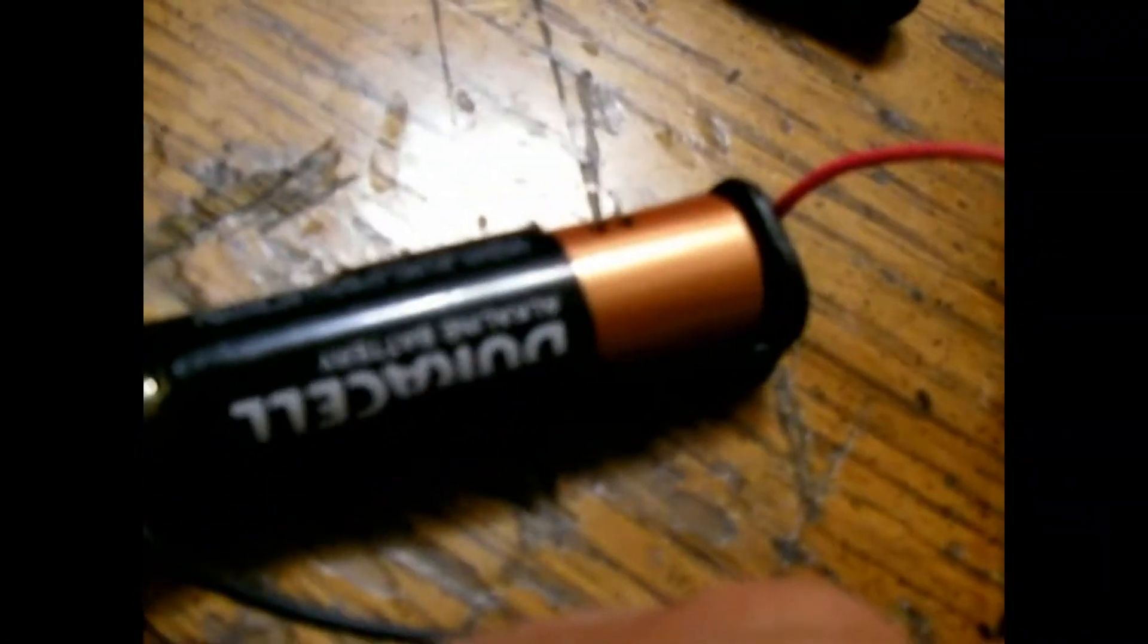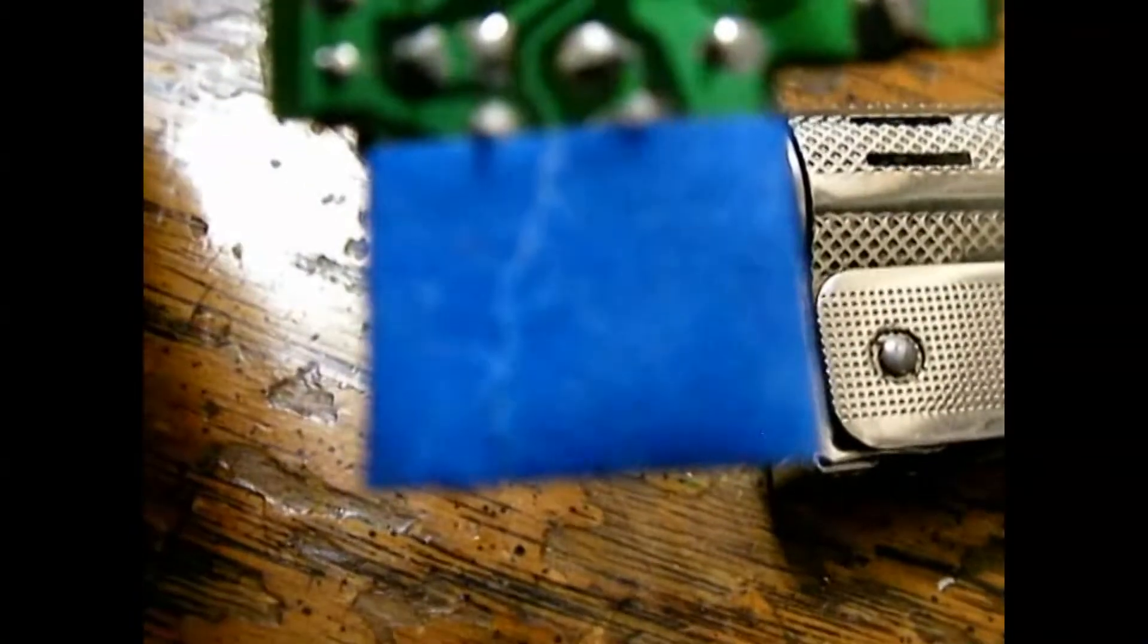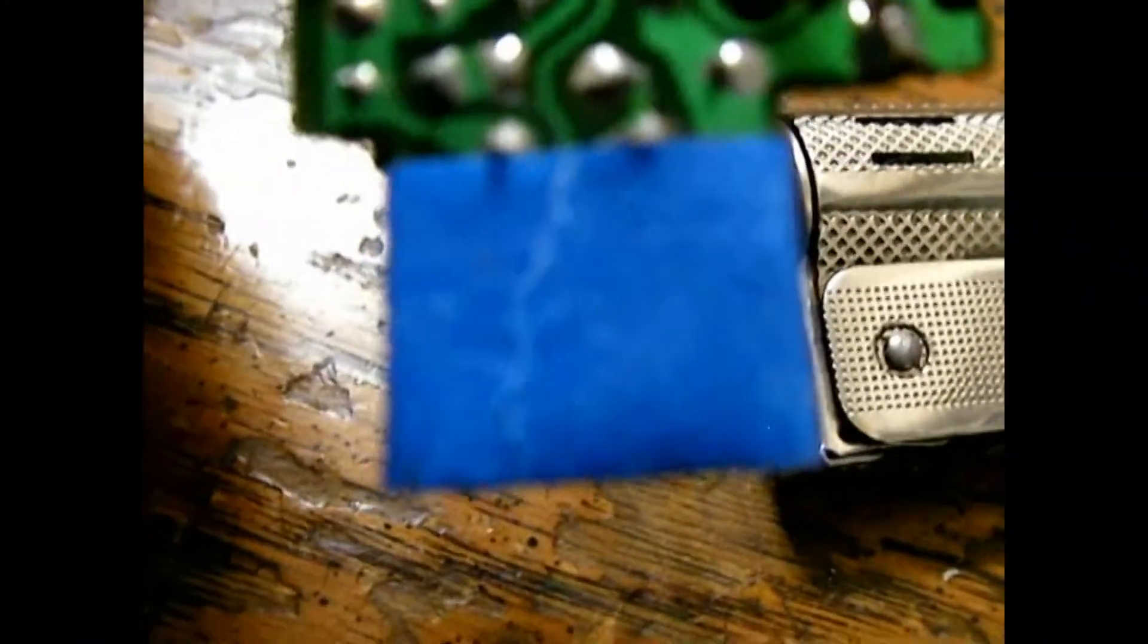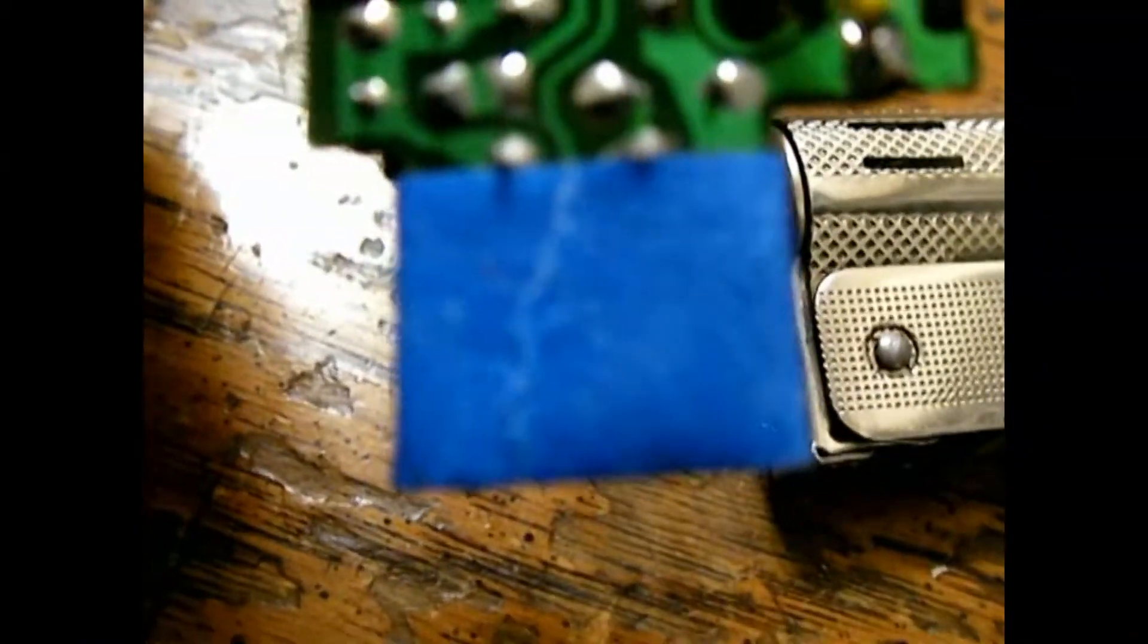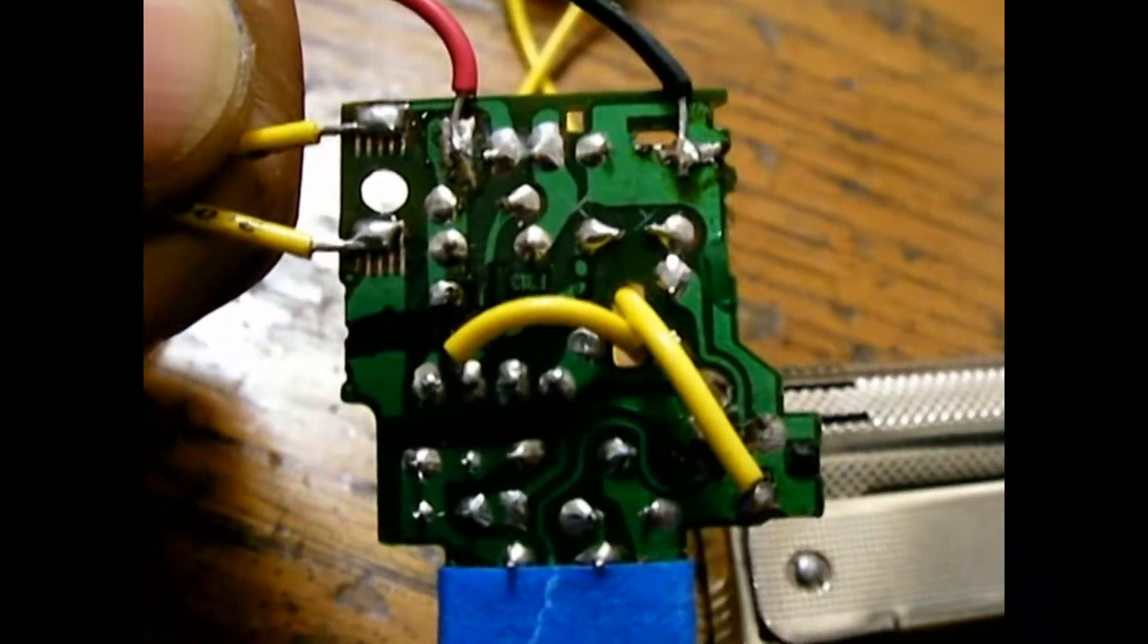Now if you turn on that 1.5 volts, those two solder points over there produce 225 volts and you'll definitely get the jolt out of it. For now this is on the testing stage. I still want to let me see.